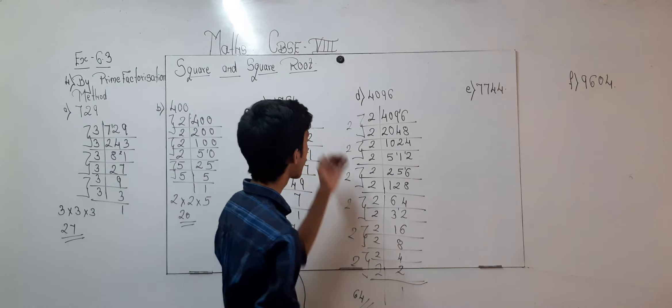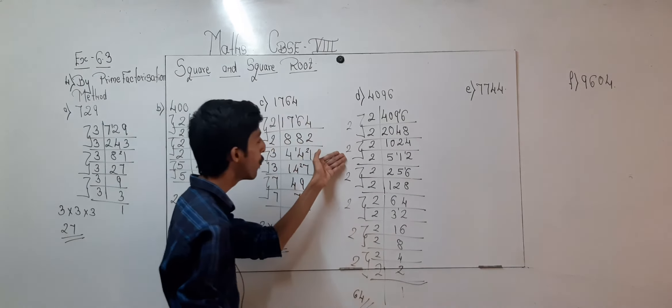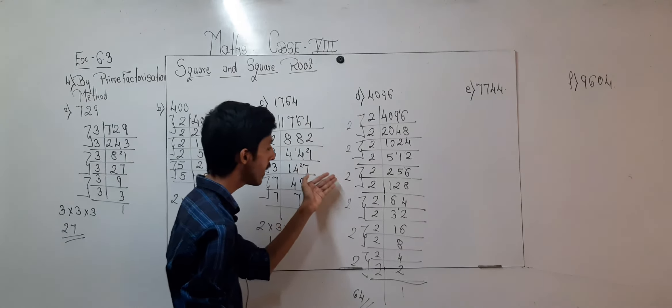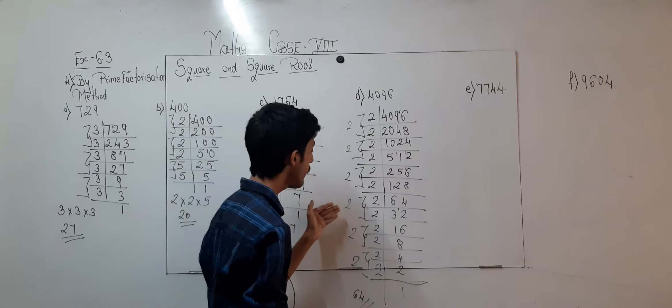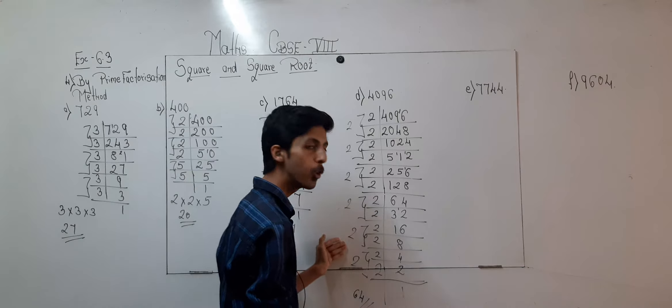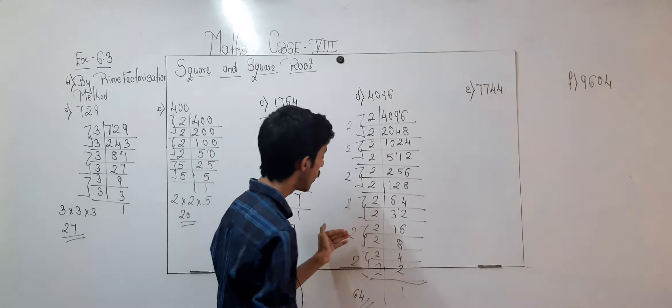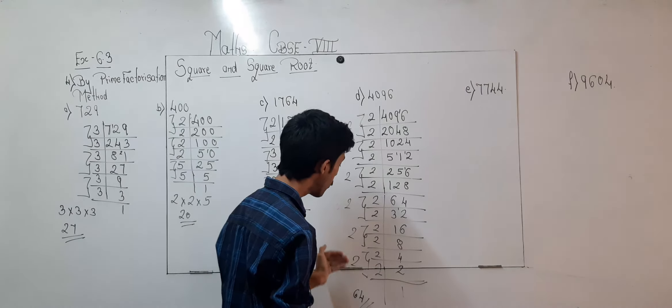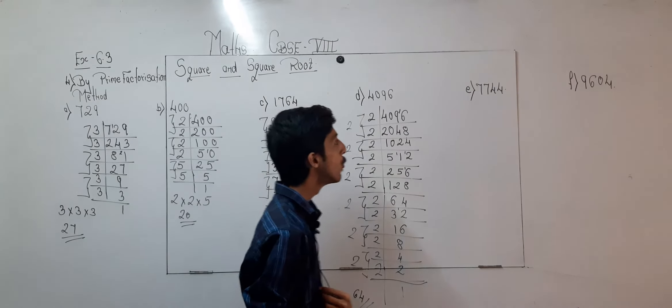Understood? See: 2 times 2 is 4, 4 times 2 is 8, 8 times 2 is 16, 16 times 2 is 32, 32 times 2 is 64. So the square root of 4096 is 64.